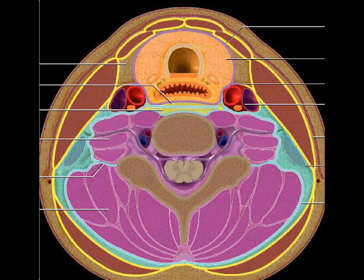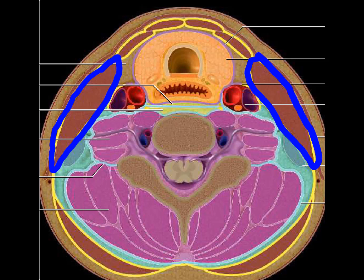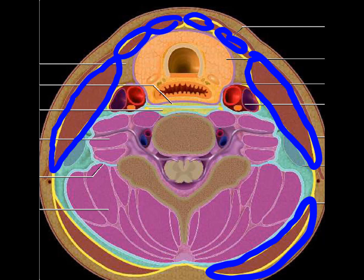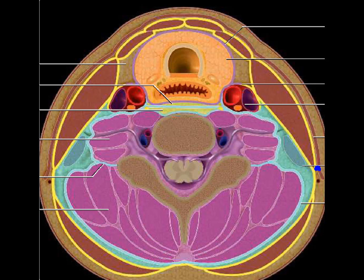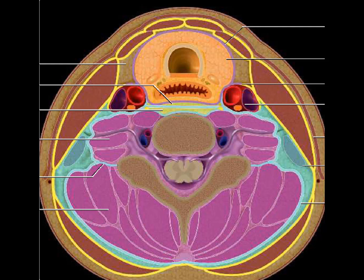The superficial layer of the deep cervical fascia is colored yellow in the image. It invests the sternocleidomastoid muscle, the trapezius muscle, and the infrahyoid strap muscles. In between these muscles it joins and forms a single layer. At one area it forms a roof over a space — the posterior cervical space, also called the posterior triangle of the neck.